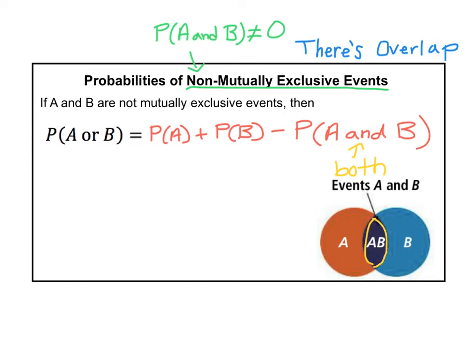You're subtracting the center. If we didn't do that and had just added the probability of A and the probability of B together — I'm circling A in red and B in blue — notice how the red and the blue would count that center section, the A and B overlap colored yellow, twice. So for non-mutually exclusive events, you have to subtract A and B so you're not double counting the overlap. Make sure you get that formula written down in your notes.